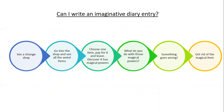These are the six sections of our imaginative diary entry — these are the ones we went through last week. First, you see a strange shop. Then you go into the shop and see all the weird items. You choose an item, you pay for it, you leave, you discover it's got magical powers, and there's a quick bit about what you do with those magical powers. Then something goes wrong, and finally you get rid of the magical item.